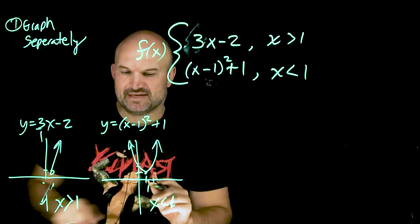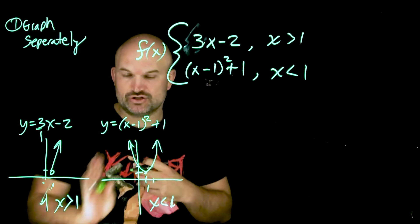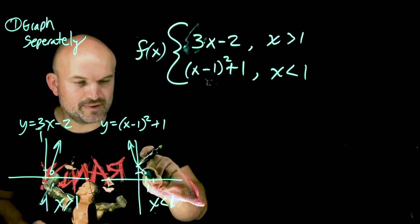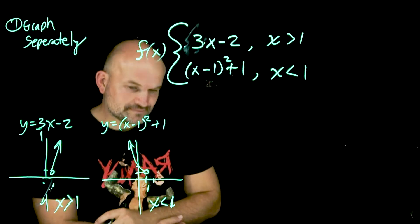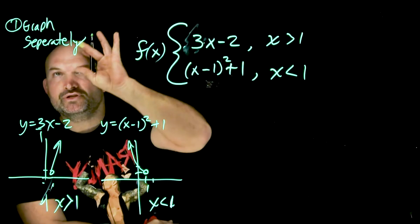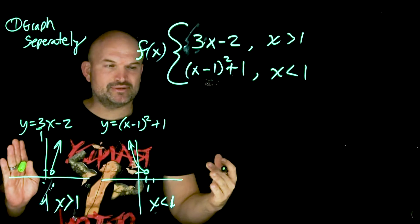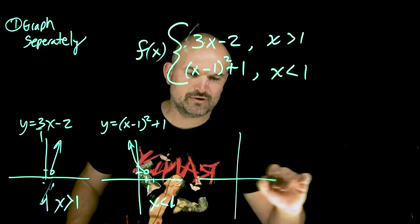Over here, it's the exact opposite. Anything larger than 1, or to the right of 1, is not going to be a part of the graph. And again, we're going to use an open circle, because 1 is going to not be included. So when you graph it separately, now all you're simply going to do is combine them to the same graph.